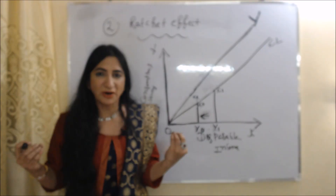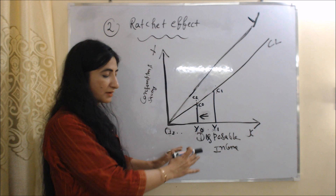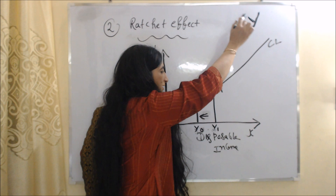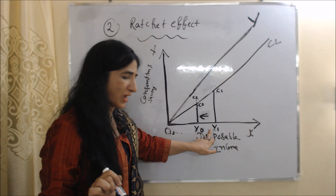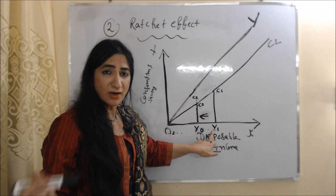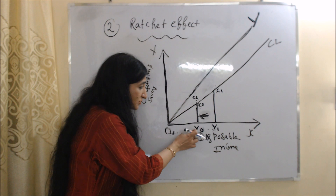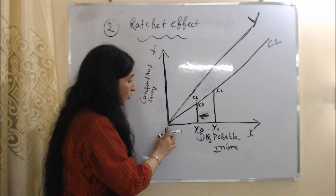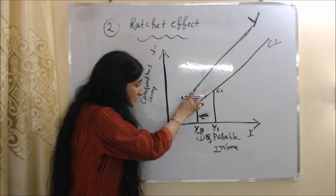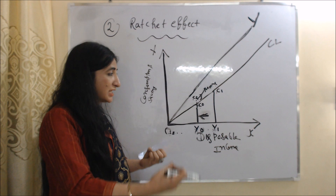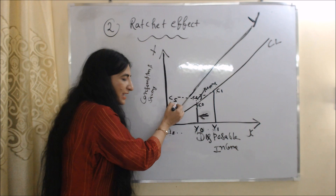Now we understand the ratchet effect with the help of this diagram. On the x-axis we have disposable income, and on the y-axis we have consumption and saving. CL is our long-term consumption function and OY is our income line. Initially, person A's income is OY1 and his consumption is C1Y1. Now suppose person A's income falls from OY1 to OY0. According to the consumption function at OY0 income, person A should consume C0Y0, but he is actually consuming C2Y0 — he is consuming C0 more due to the ratchet effect. When his income falls, he is not able to reduce his consumption, and he moves to the short-run consumption function CS.